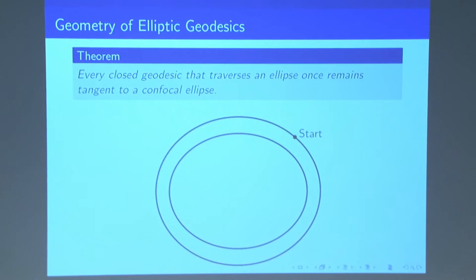So how we do this is we first use this tool from plane geometry. It's a theorem that states that every closed geodesic that traverses an ellipse once always remains tangent to a confocal ellipse. So confocal just means an ellipse with the same foci. So what do I mean? Let's say we just start out on some random point on our outer ellipse and we just travel like a billiard ball. And the point is we always remain tangent to this inside ellipse. And so why is this tool useful for us? Well, now we can characterize every closed geodesic on our ellipse by whatever inner ellipse that we choose.